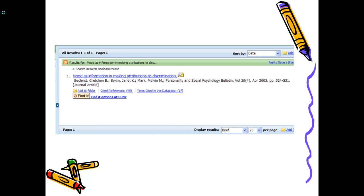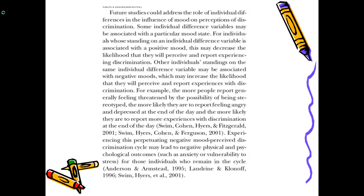And here's our second example. Janet Swim, mood as information making attributions to discrimination. And again, this is one of these lying EBSCO situations where there's nothing here that says the article's online. But if we click find it, you will find the PDF file. So again, take a minute or so to read this slide. Stop the slideshow.